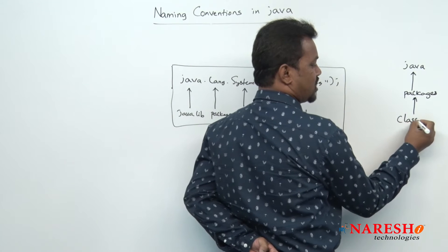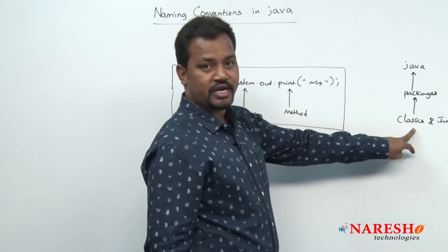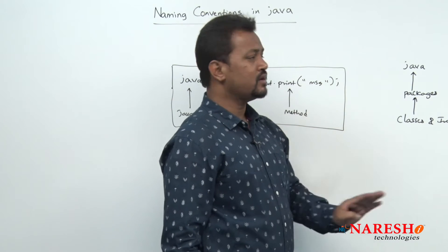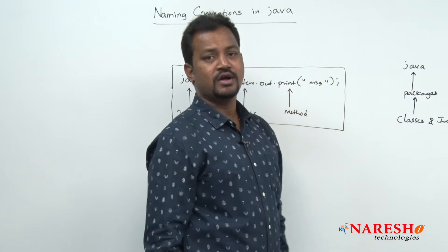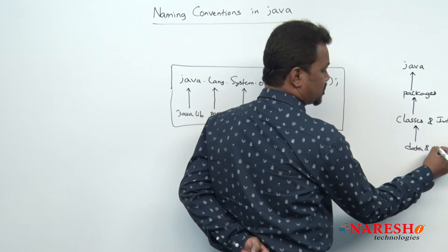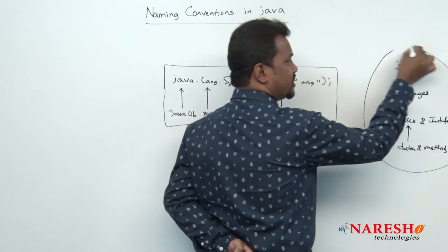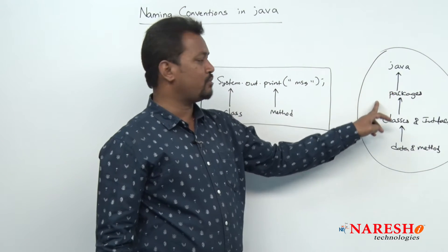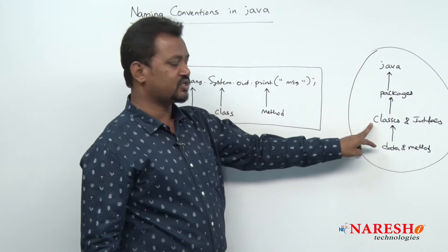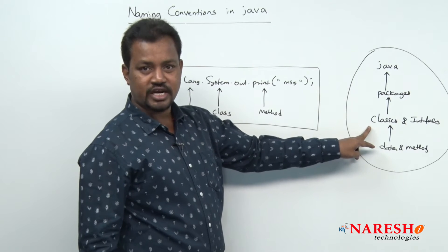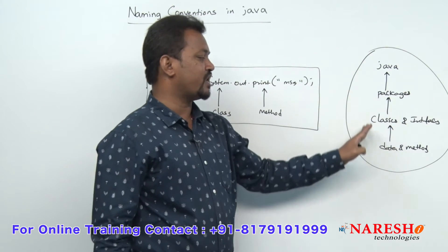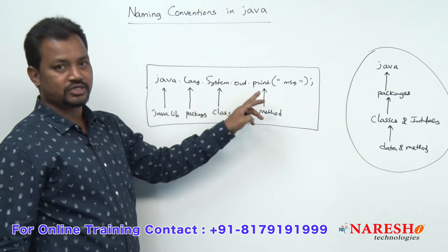Classes and interfaces will have a collection of data, methods, blocks, constructors, and so on. For convenience, we take classes and interfaces as a collection of data and methods — nothing but variables and methods. The transition is very important: Java library is a collection of packages, packages are a collection of classes and interfaces, and classes and interfaces are a collection of data and methods.